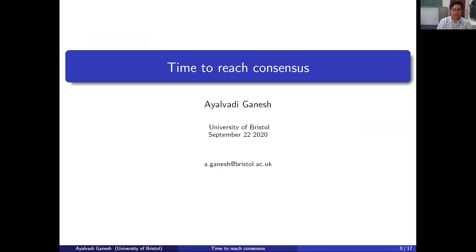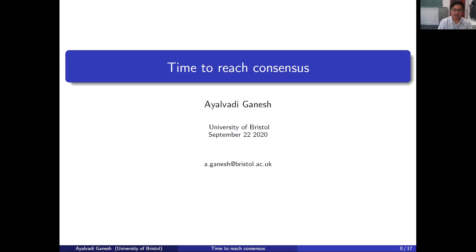We are going to look at the time to reach consensus. I'm going to begin by describing a general approach to calculating or bounding this random time. While the approach works for a general graph in principle, in practice you can only do the calculations if there's a lot of symmetry in the graph, so we will restrict the actual calculation to the complete graph, but I'll describe the method in full generality.